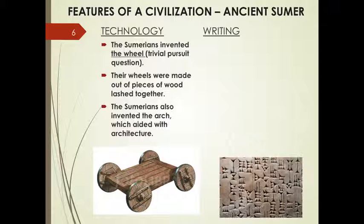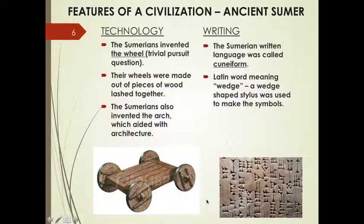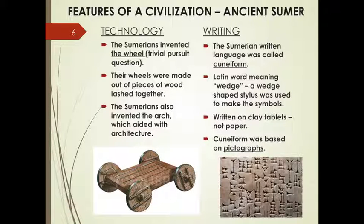The Sumerians did have a writing system called cuneiform. Cuneiform is a Latin word meaning 'wedge,' because they used a wedge-shaped stylus to make symbols — making indentations or marks in clay that, depending on their shape and direction, represented different sounds of the Sumerian language. Records were kept on clay tablets, not paper, since paper was not invented until the Egyptians came later — that word is papyrus. And cuneiform was based on pictographs, another vocabulary word: a picture or symbol that represents a sound or a word.